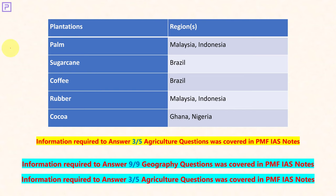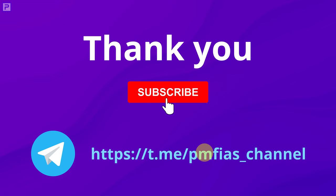In summary, from geography, nine questions could be answered using PMFIS content. In agriculture, two of the questions were covered from PMFIS content. Next we'll move to environment. Thank you for watching. Don't forget to subscribe to our Telegram channel, where we keep posting updates about the course. Thank you.